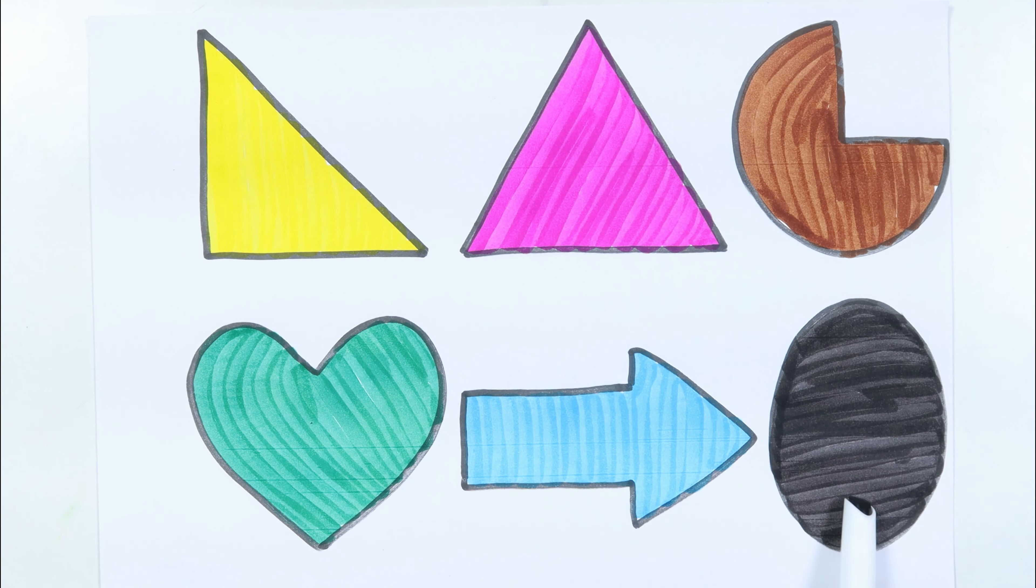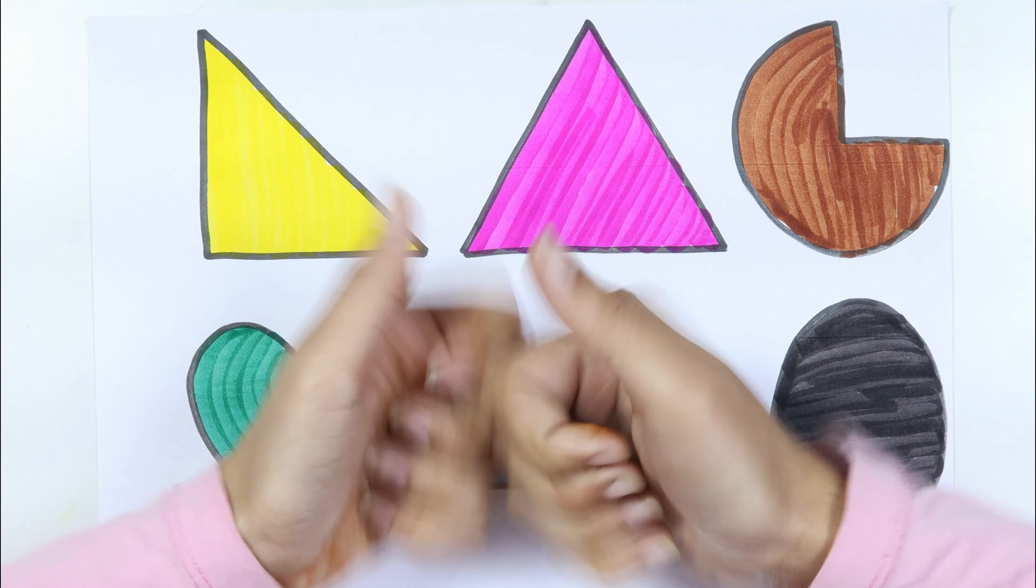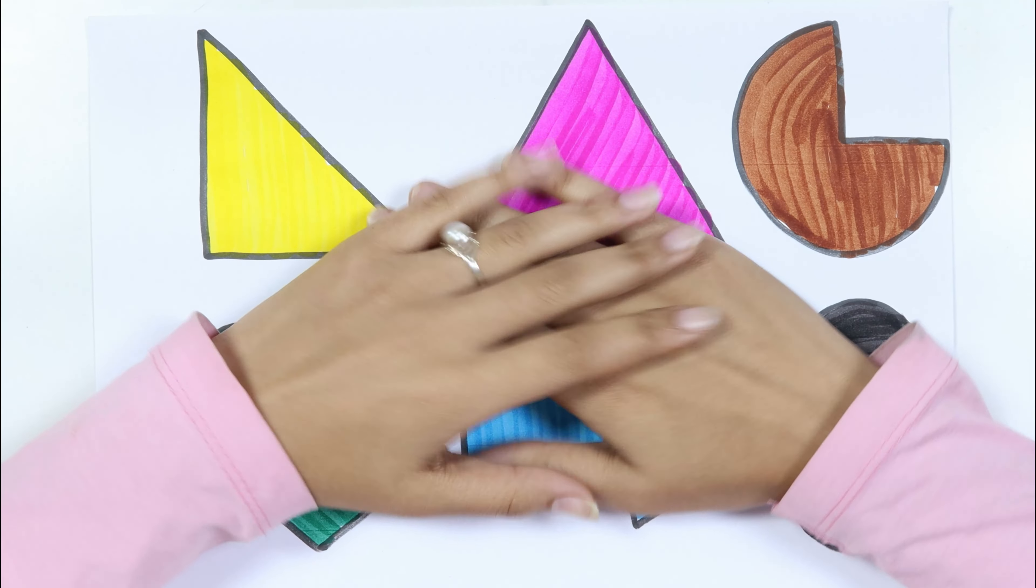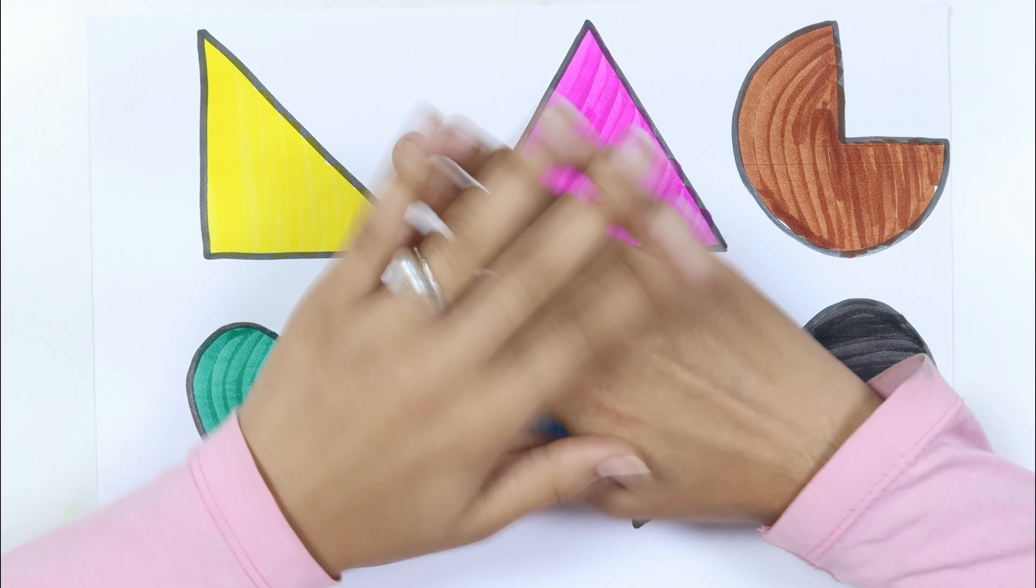Right Crangle, Crangle, Pie, Heart, Arrow, Ellets. Thank you for watching my video and watch the video. Bye-bye.